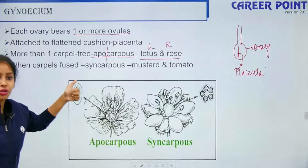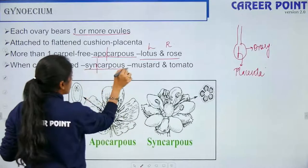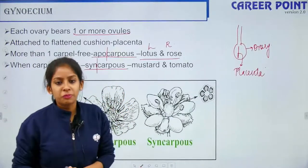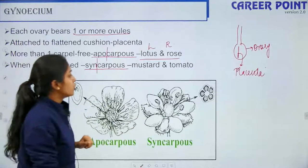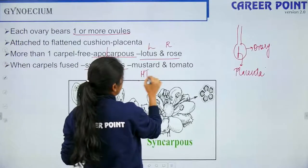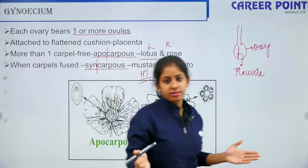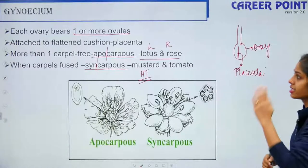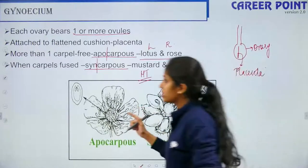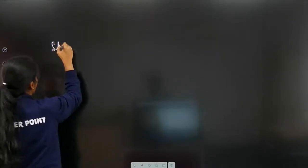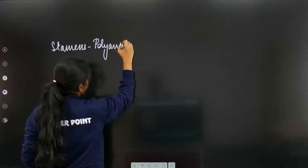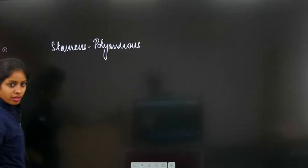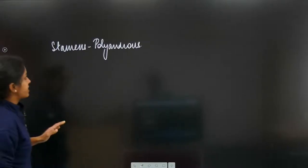When carpels are fused to each other, it is known as syncarpous — think of syncing data. Example is mustard and tomato. When stamens are free, it is polyandrous condition. When stamens are united: monadelphous, diadelphous, and polyadelphous.